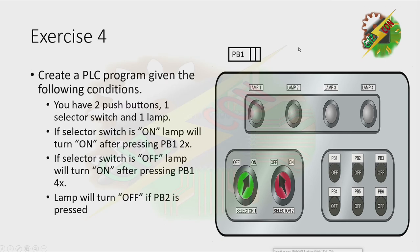Let's have Exercise 4: Create a PLC program given the following conditions. You have two push buttons, one selector switch, and one lamp. If selector switch is on, lamp will turn on after pressing PB1 two times. If selector switch is off, lamp will turn on after pressing PB1 four times. Lamp will turn off if PB2 is pressed. Let's have our demonstration. Let's press PB1. Because our selector switch is on, we need to press PB1 two times — we already pressed it. Okay, that's it.